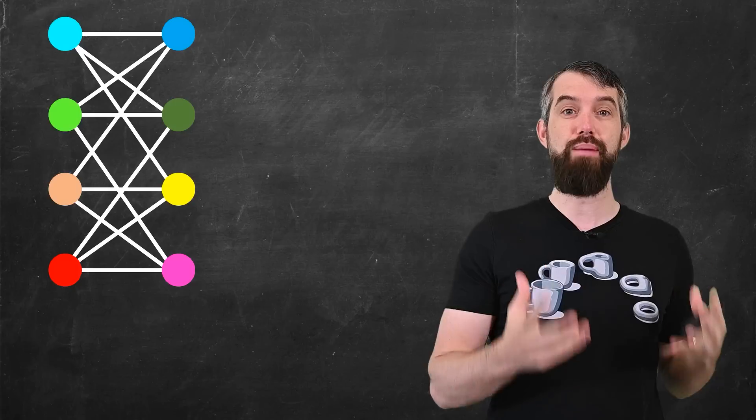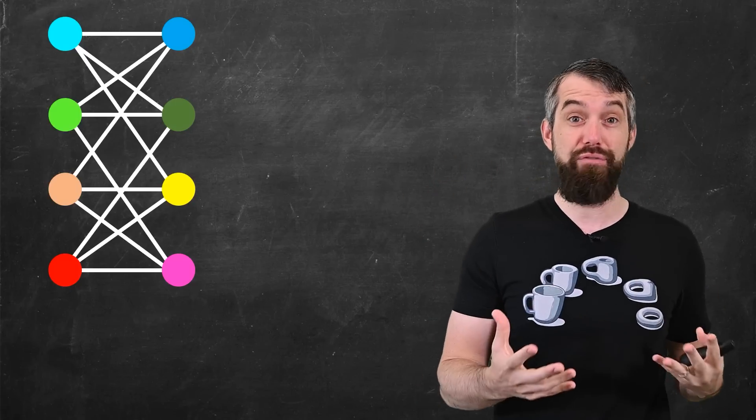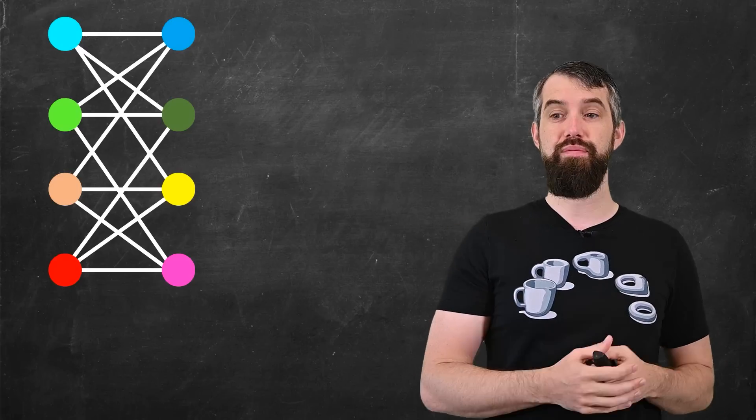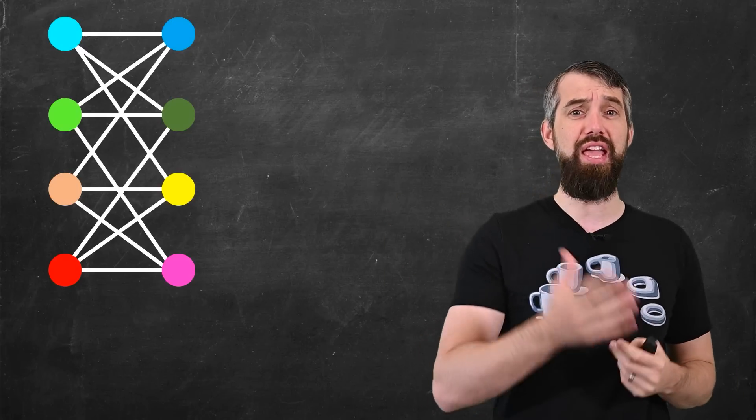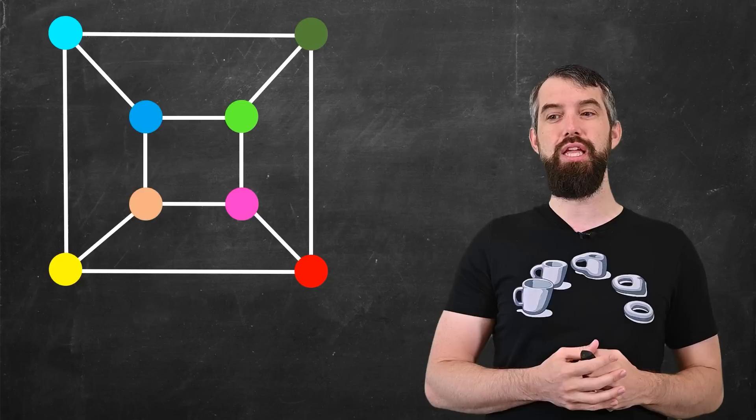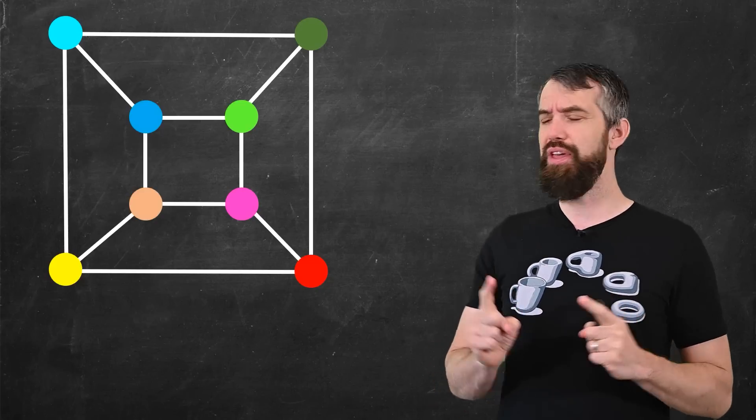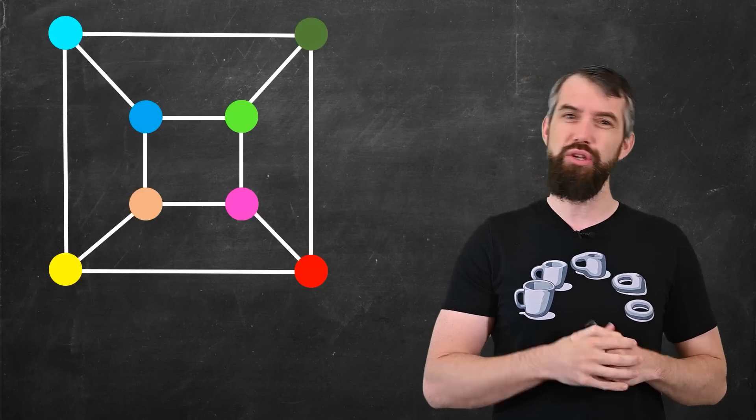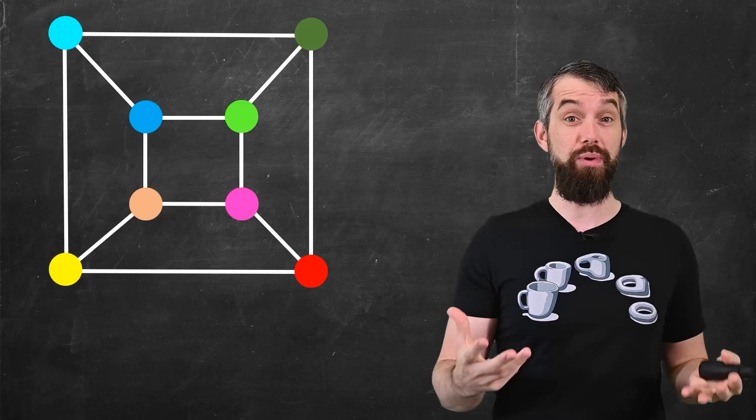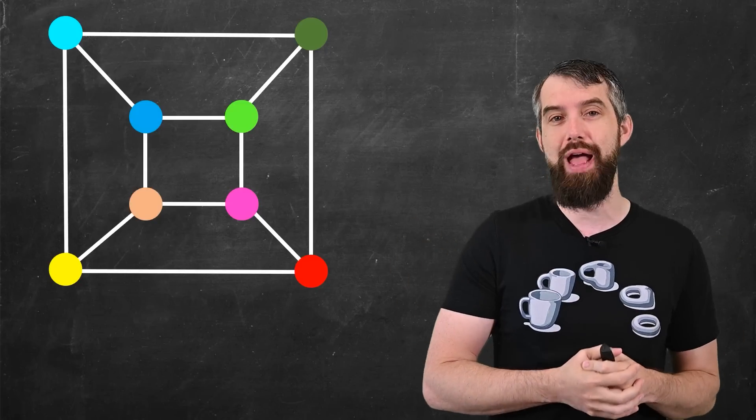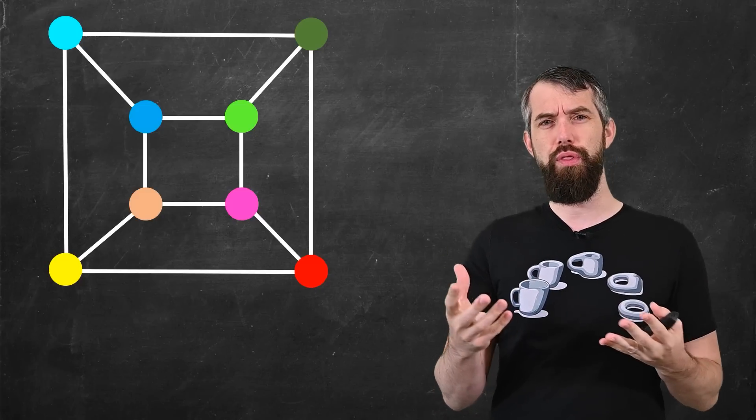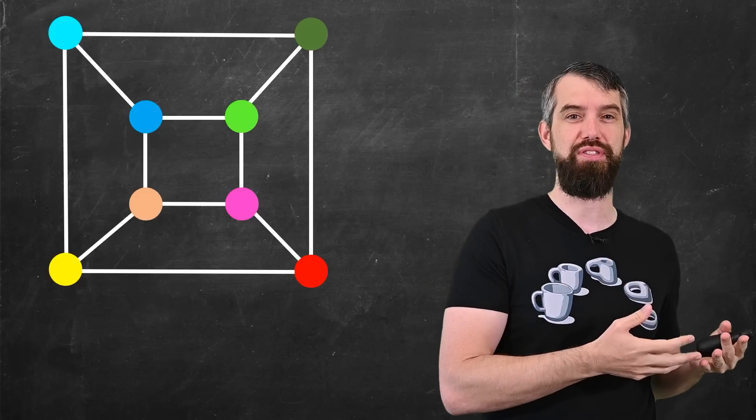To introduce the idea, I'm going to use an example that comes from graph theory. This is a graph that consists of vertices and edges connecting them. This one happens to have eight vertices and twelve edges, and here is a different graph that also has eight vertices and twelve edges. The question is, are these two graphs the same graph or are they different graphs?